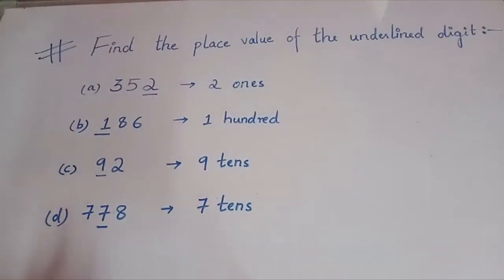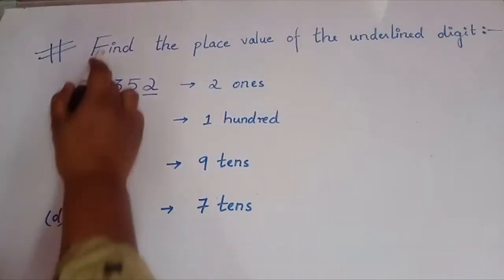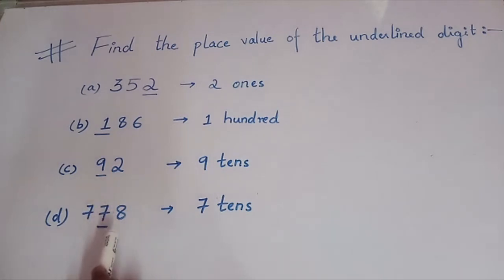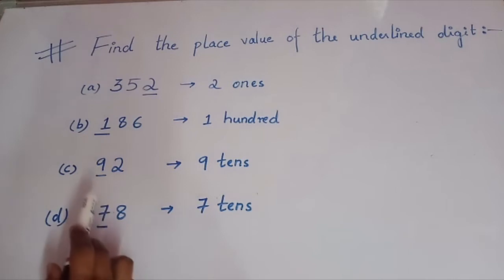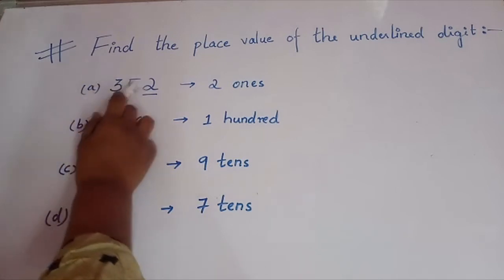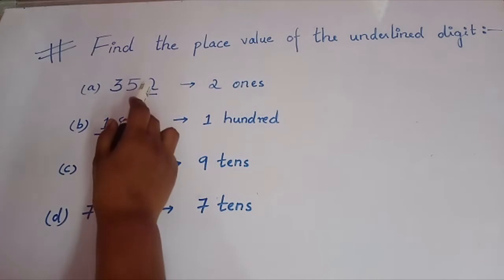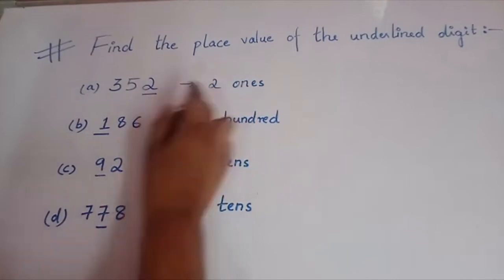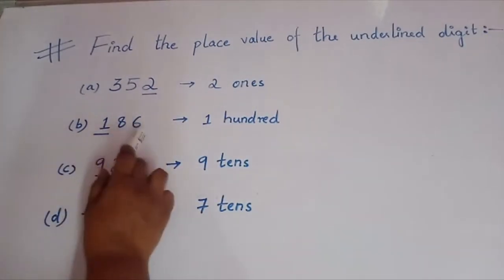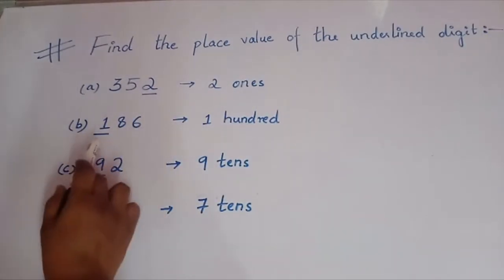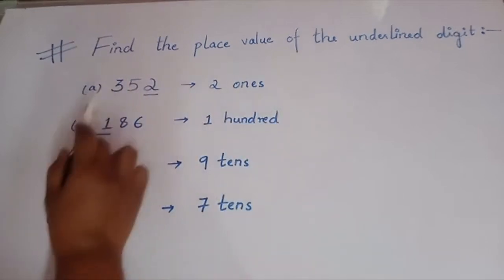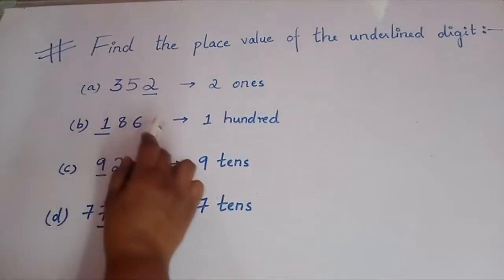Now we will come to the questions. The first question is: find the place value of the underlined digits. You have to determine the place value of the digit which is underlined. Let's take some examples. First: 352 — the digit 2 is underlined, so the place value of 2 is 2 ones. Second: 186 — the digit 1 is underlined, so the place value of 1 is 100. Since it is 1, we write 100.